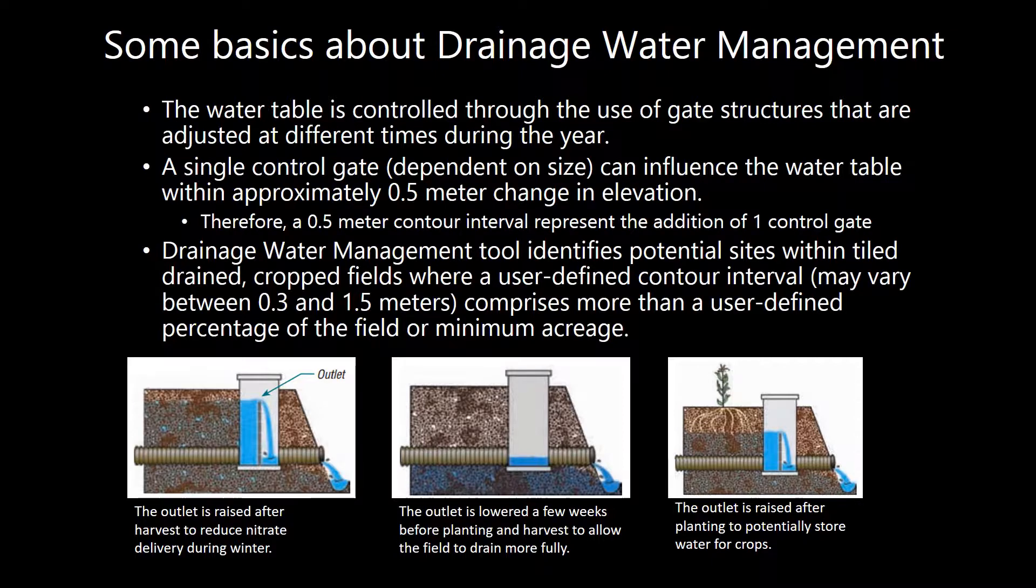The user can define the contour interval that is used. So one gate is suggested for a half a meter elevation change. If you were using a one meter contour interval, that means two gates would be suggested for that interval.